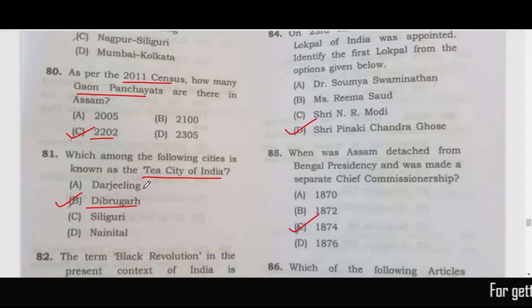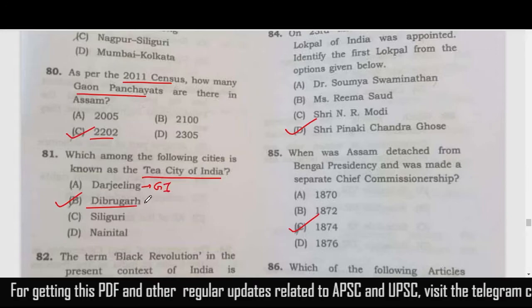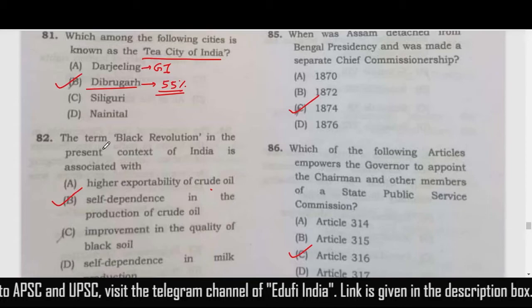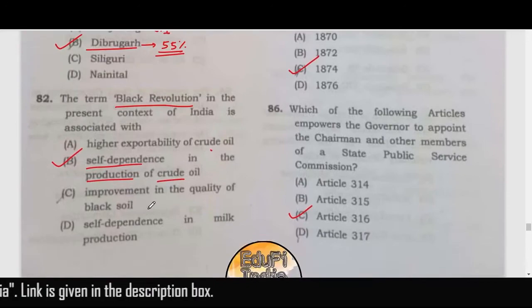Darjeeling is also famous for tea and Darjeeling tea was the first GI tag of India. Dibrugarh is in Assam, and Assam accounts for almost 55% of tea production. Dibrugarh is known as the Tea City of India. The Black Revolution relates to crude oil and particularly to self-dependence in crude oil production.